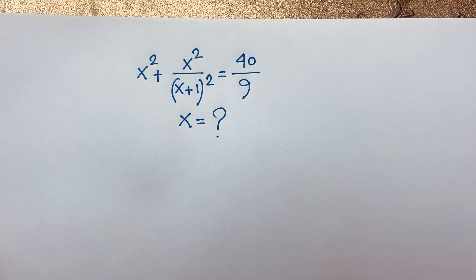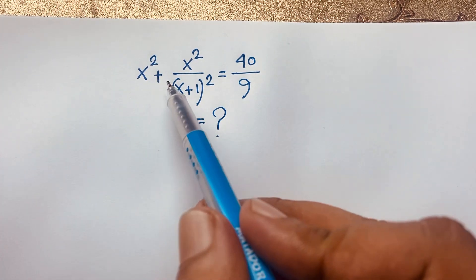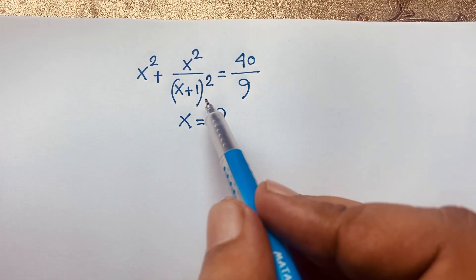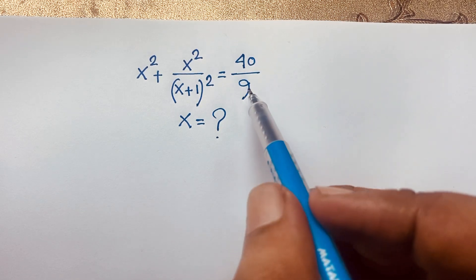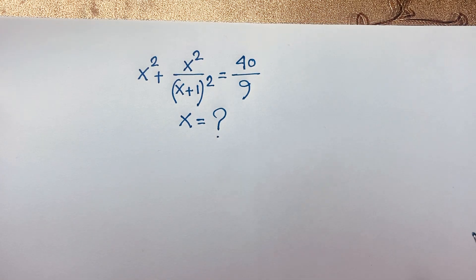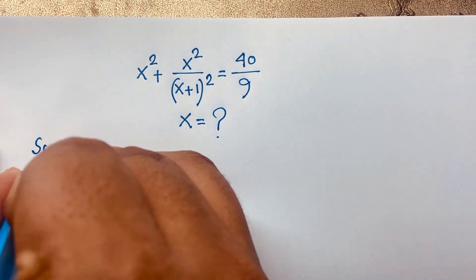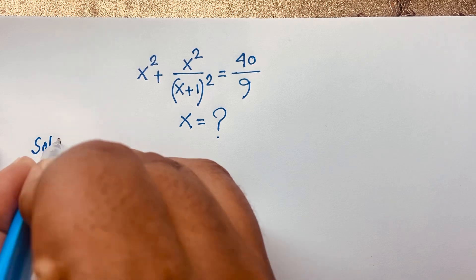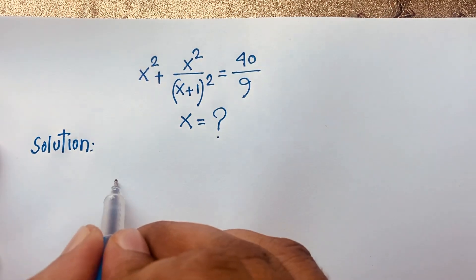Hello everyone, welcome to Rasha's classroom. Today we have solved a nice math problem. This question is x squared plus x squared over (x+1) whole to the power 2, is equal to 40 over 9. What is x equal to? How to solve this exponential math problem? Let's start the solution.